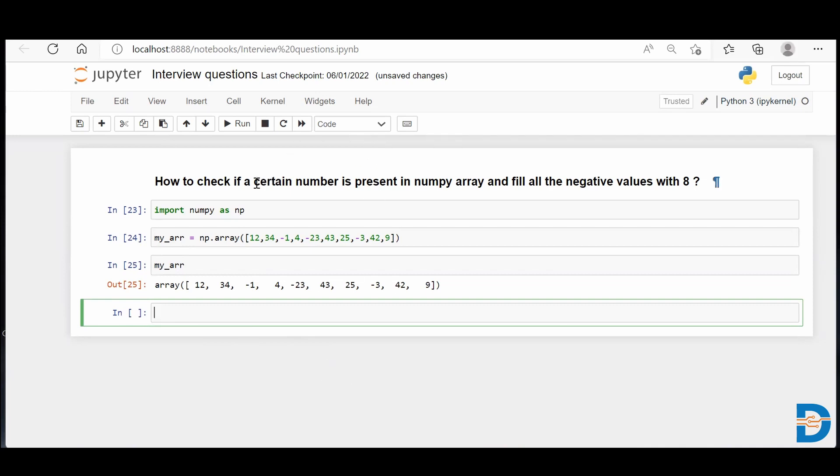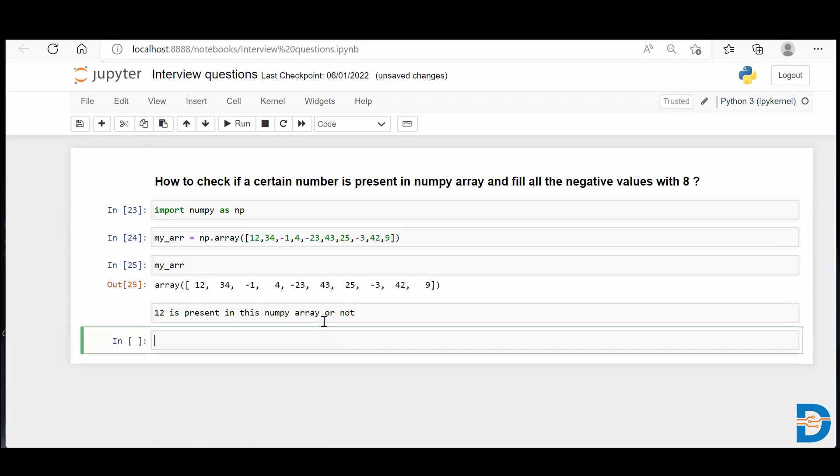So the first question is how do you check if a certain number is present in a NumPy array or not? Let's say I want to check whether 12 is present in this NumPy array or not. So how do we do this? For doing this, NumPy has an inbuilt functionality. It's called isin, np.isin.